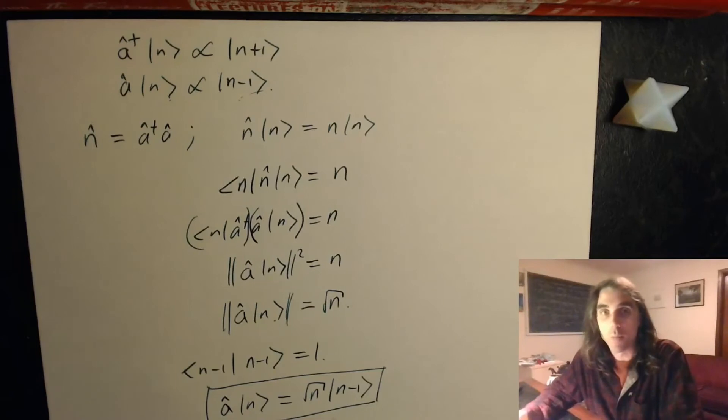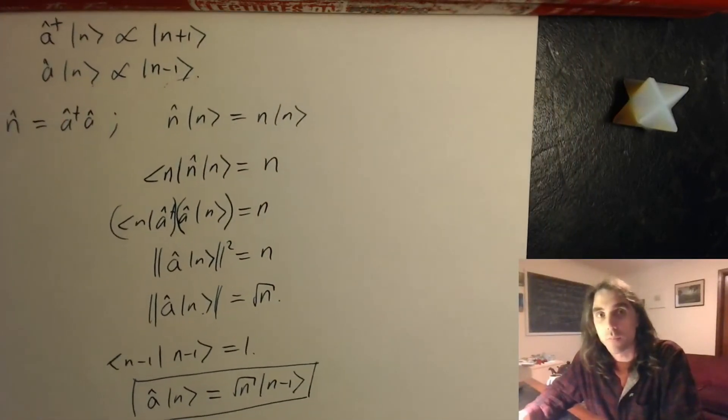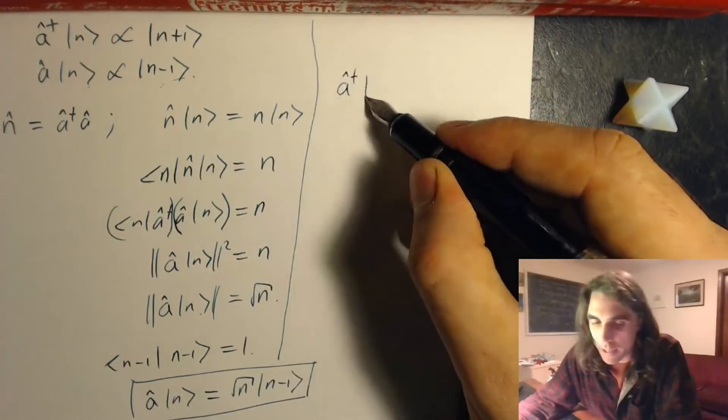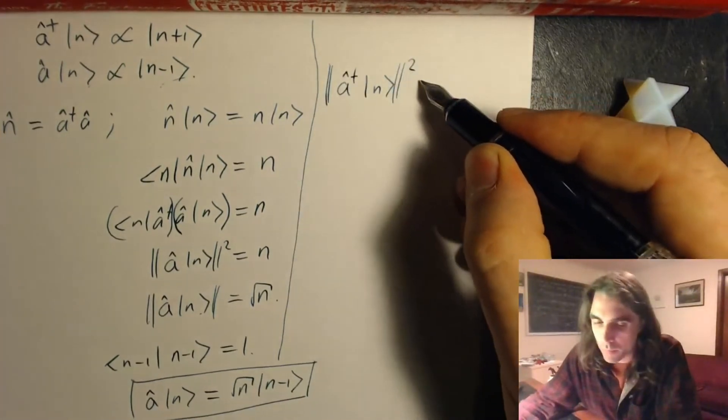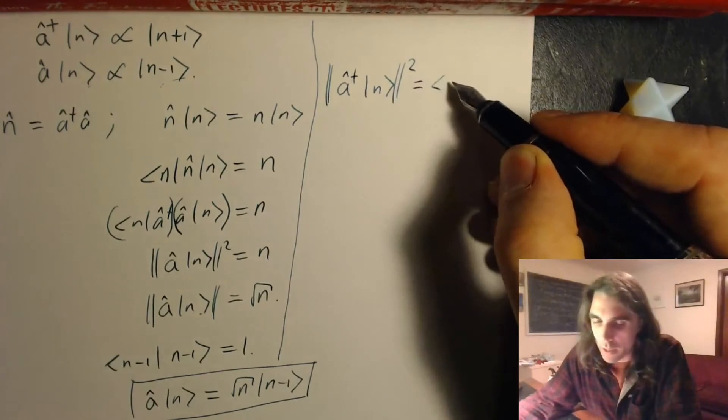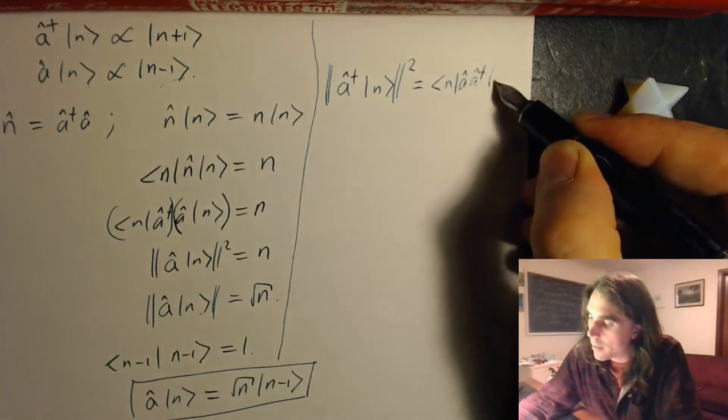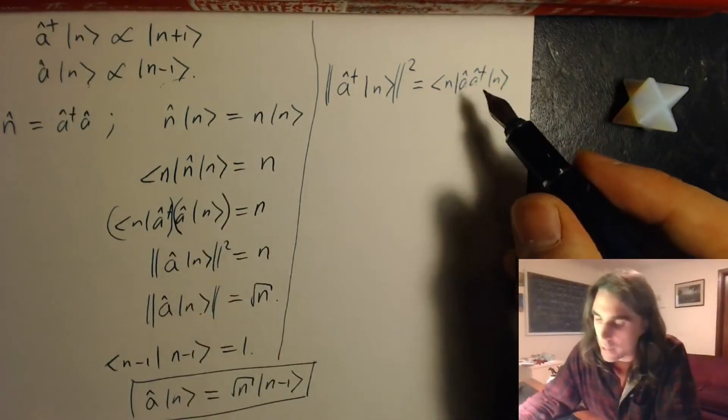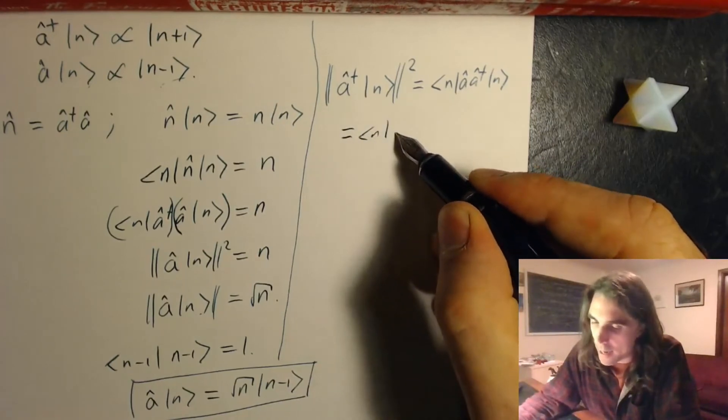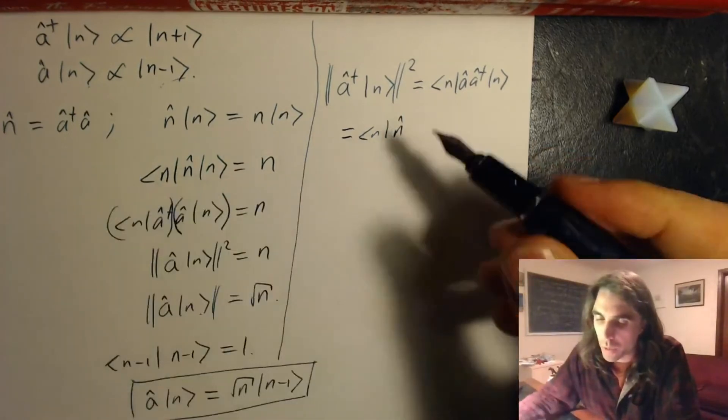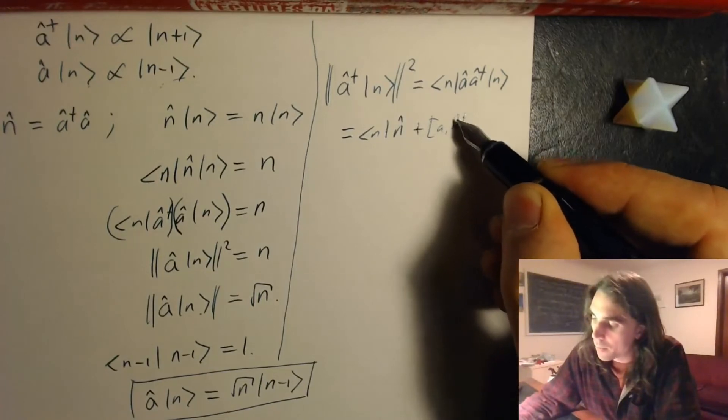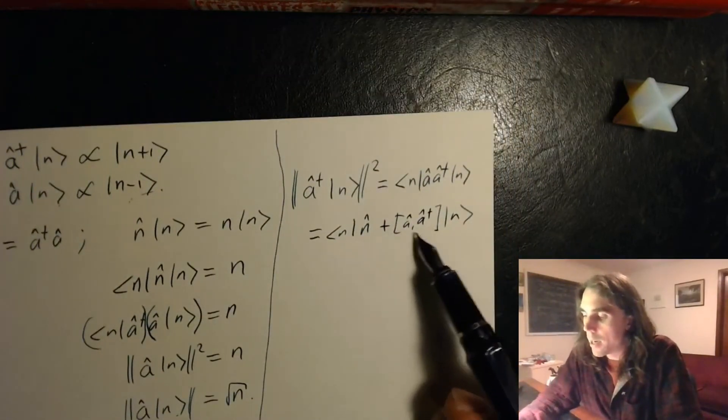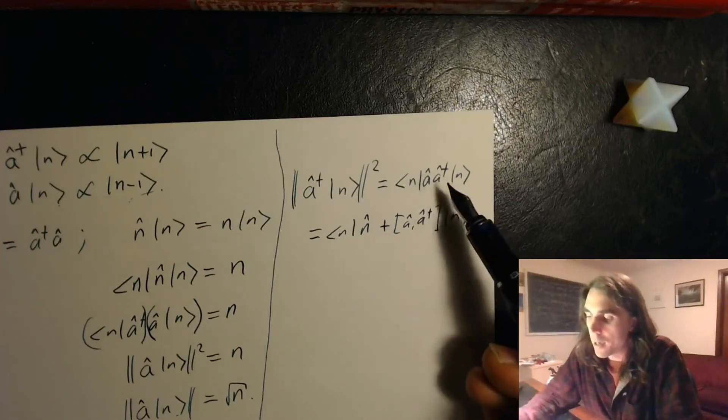So that's the normalization of this state. Let's do the same for the raising operator. So in this case, we can say that the raising operator acting on n modulus squared is equal to n a a dagger acting on n, because it's just the Hermitian conjugate of this thing over here. So we need to use the commutator. So this thing equals state n number operator n, which is a dagger a plus the commutator a comma a dagger acting on n. So if you expand this a dagger a plus commutator a comma a dagger, you'll find that you just get a a dagger again.